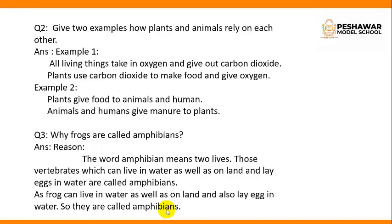Question number 2: Give two examples of how plants and animals rely on each other. Example number 1: All living things take in oxygen and give out carbon dioxide. Plants use carbon dioxide to make food and give out oxygen. Example number 2: Plants give food to animals and humans. Animals and humans give manure to plants.